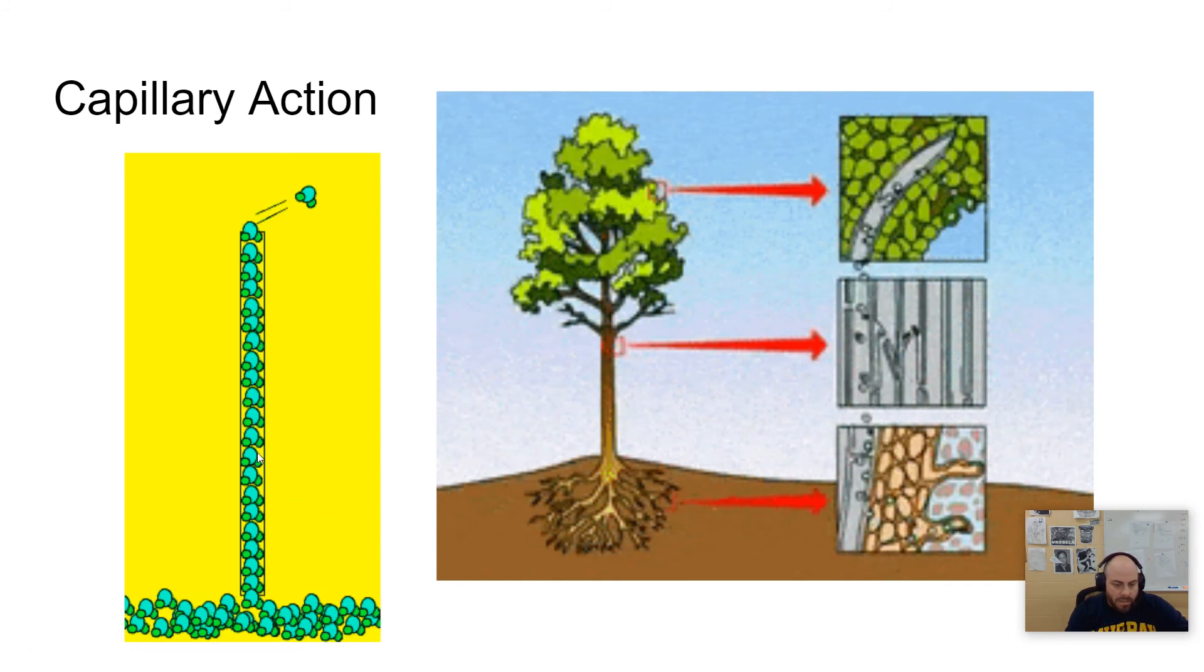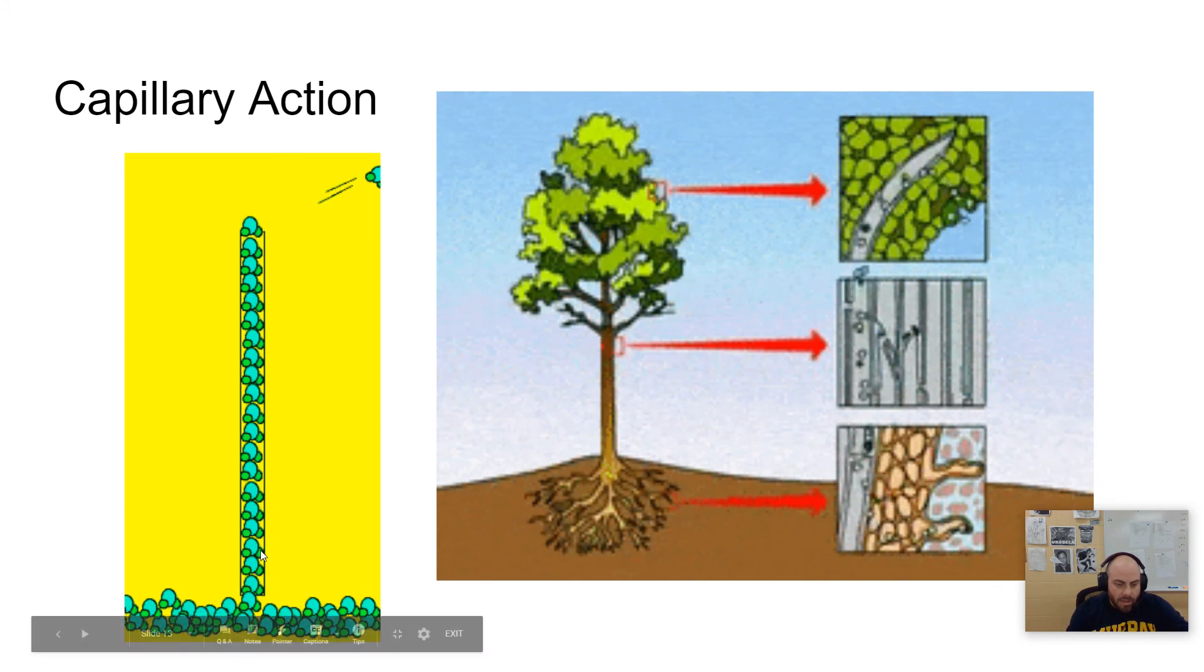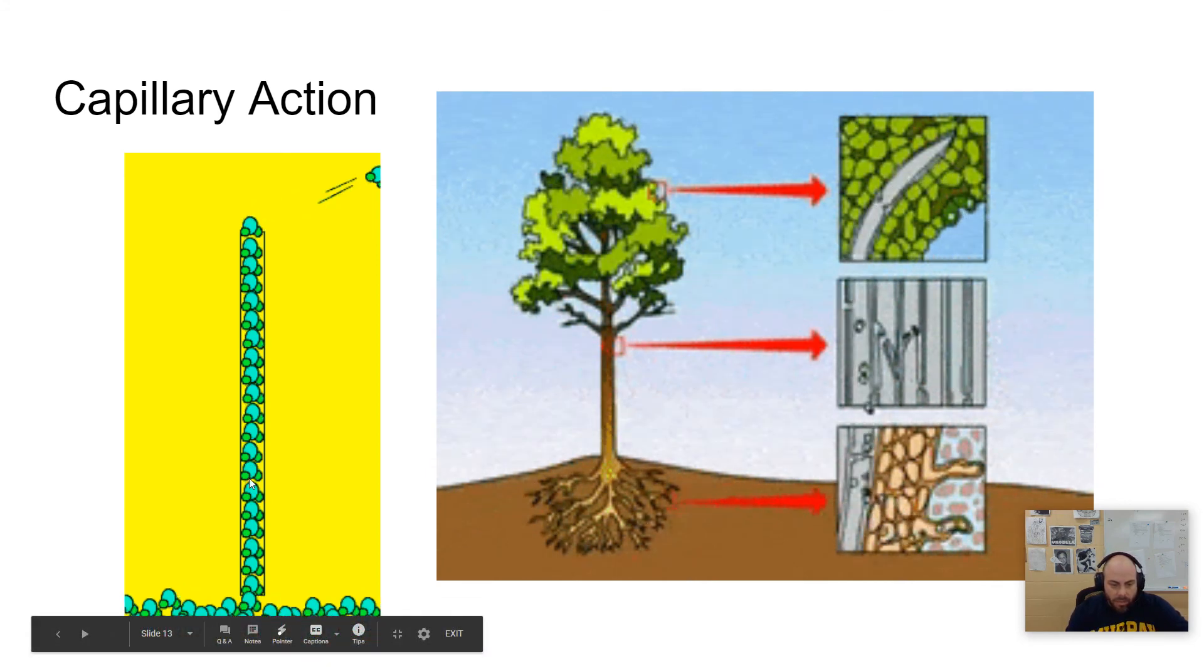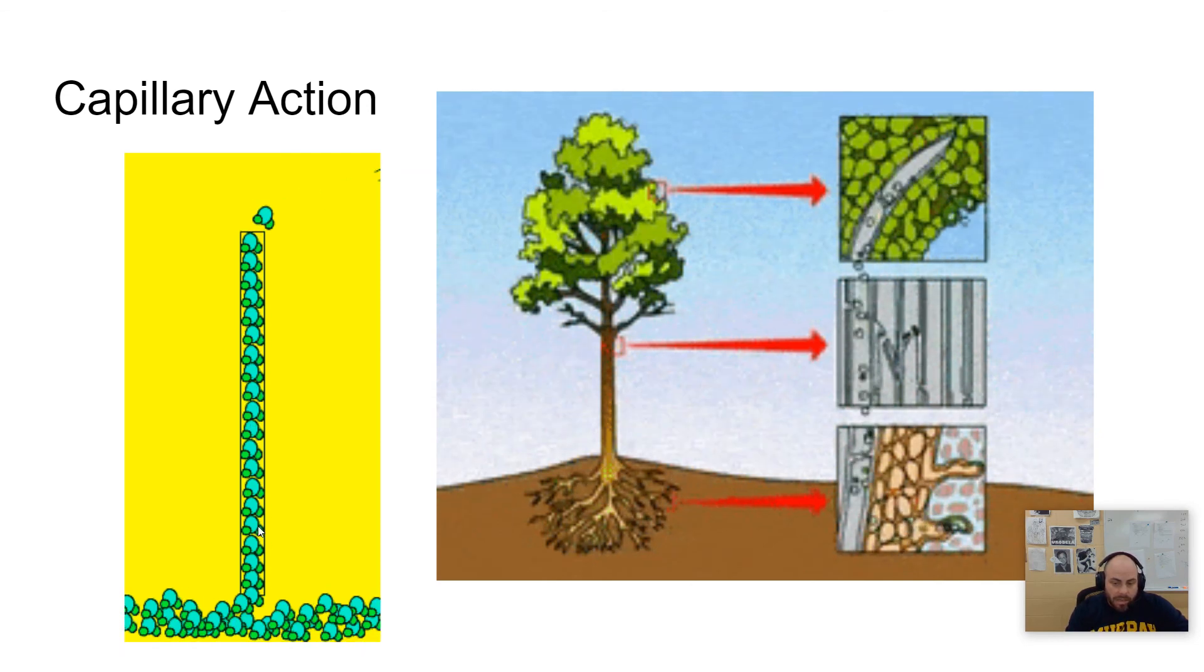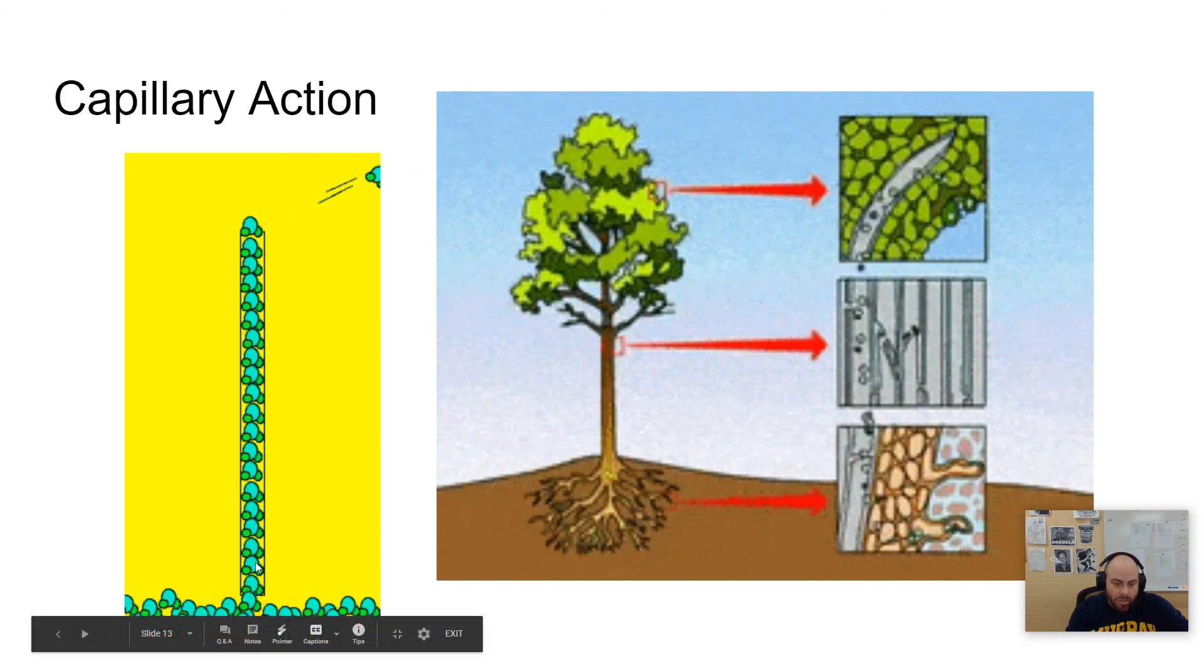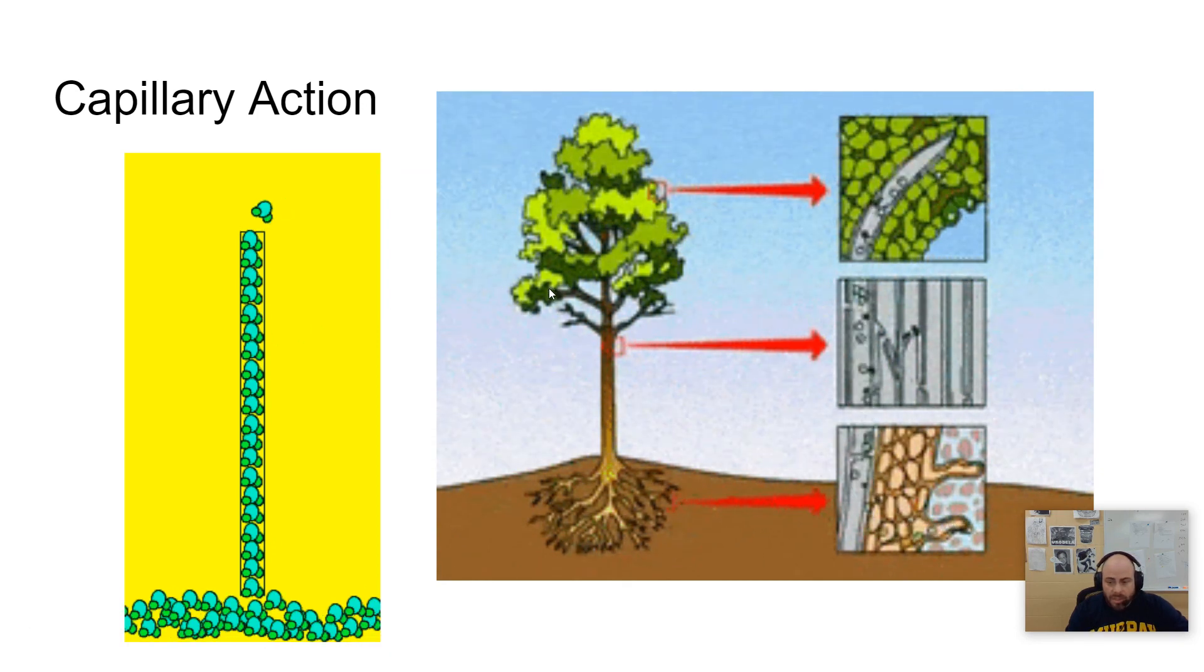it's because water likes glass, as we demonstrated earlier. And so it's attracted to the glass. And as water climbs the tube, because it's attracted to the glass, it is pulling the other water molecules up the tube because water really likes itself. And so it creates this capillary action, whereas water is just climbing up the tube.